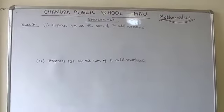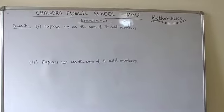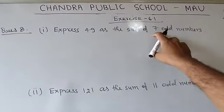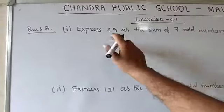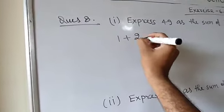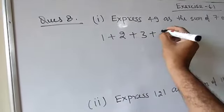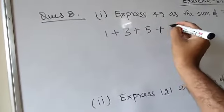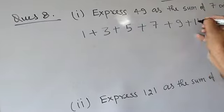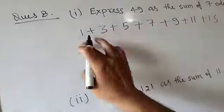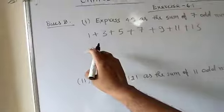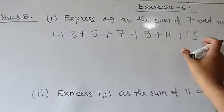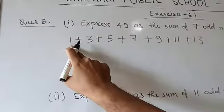Here is question number 8, which has two parts. First: express 49 as the sum of 7 odd numbers. Since 7² = 49, you write the first 7 consecutive odd numbers: 1+3+5+7+9+11+13. Counting these, there are 7 odd numbers, all consecutive and starting from 1.